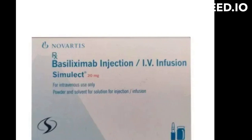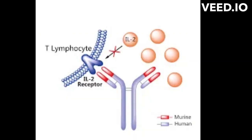Basiliximab is a chimeric monoclonal antibody that binds to the interleukin-2 receptor alpha chain, IL-2R-alpha, also known as CD25, which is found on the surface of activated T-lymphocytes.